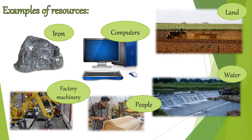It's always nice to see pictures of what we're talking about, and here are examples of resources. There's a picture of iron that we get from underground, computers, and in the top right-hand corner we have land where we can grow crops. At the bottom there's water that we need to survive. To the left we have somebody making furniture — you see, people are also a resource because we make things. And then the last one is factory machinery, which is made by people to do things for us.